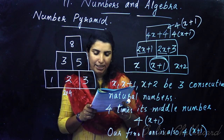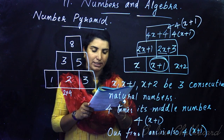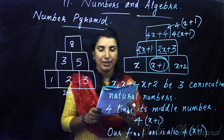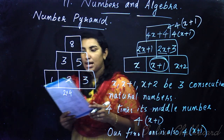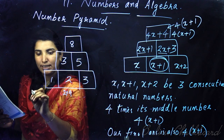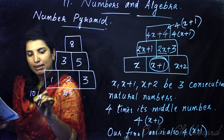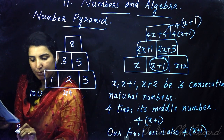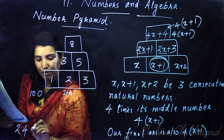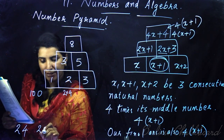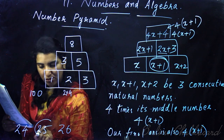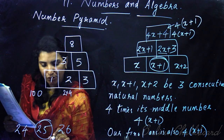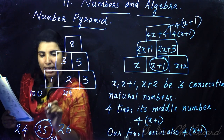So to finish 100, we should start with 24, 25, 26. In the case of 100, the numbers are 24, 25, 26, so we have 25 times 4 equals 100.